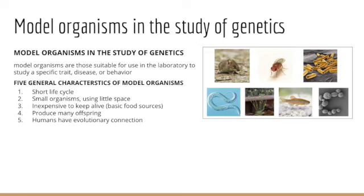E. coli then became an important model organism — a bacterium that is very small, unicellular, with a rapid reproduction rate of about every 20 minutes under ideal conditions, and it grows in a very simple nutrient broth. It's used to study DNA replication, transcription and translation, the process of producing protein, gene regulation, cell cycle, and to target and study new antibiotics.